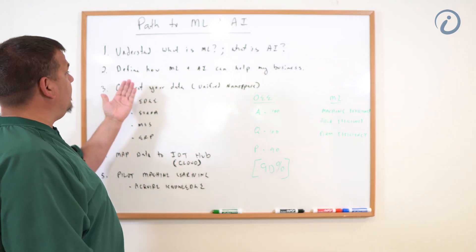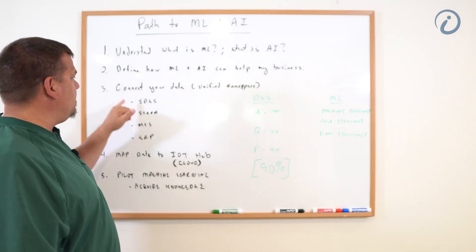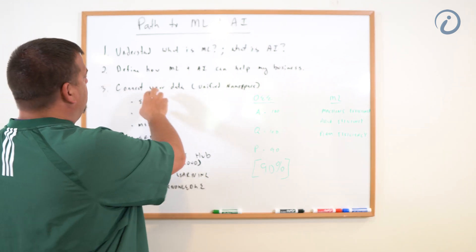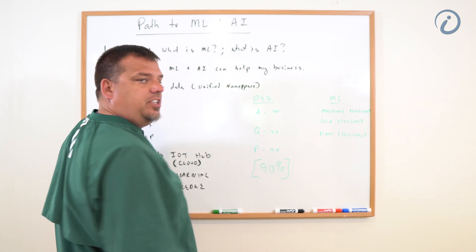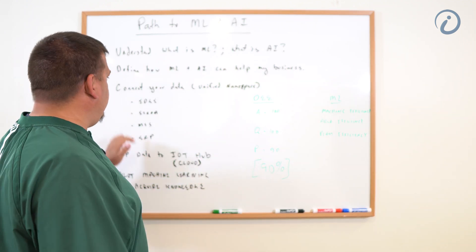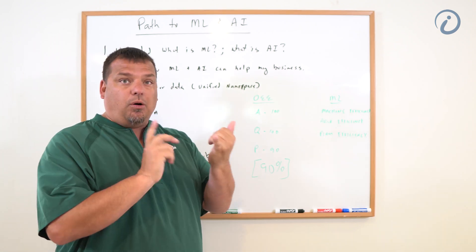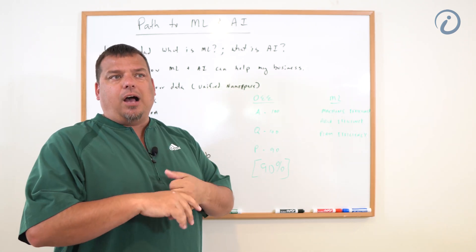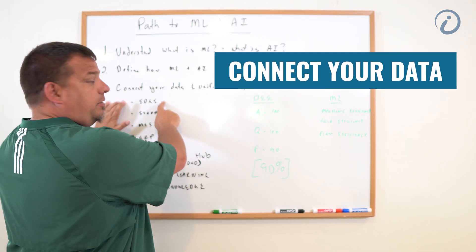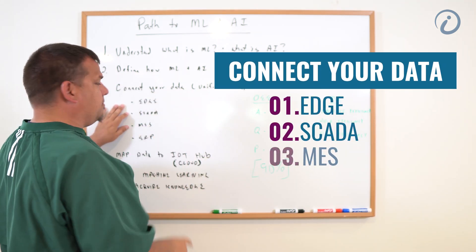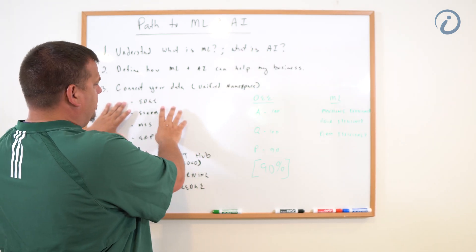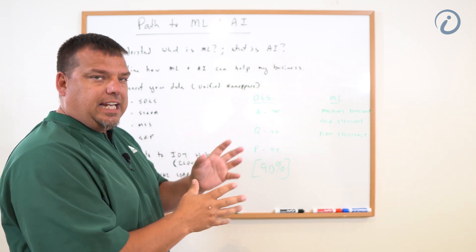Once we've determined how we can help the business, the very next step is to connect our data. In order to accurately acquire knowledge about machine efficiency, area efficiency, and plant efficiency, we need to know how all of our equipment is running. We have to get data from the edge — from our SCADA system, our MES system, and our ERP system — and pipe all of that into a unified namespace.